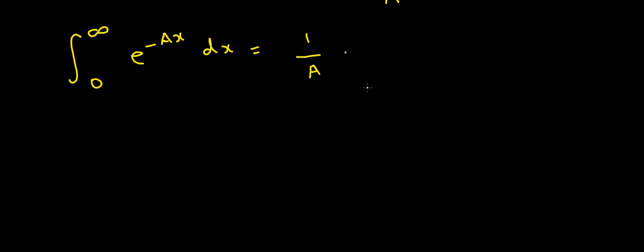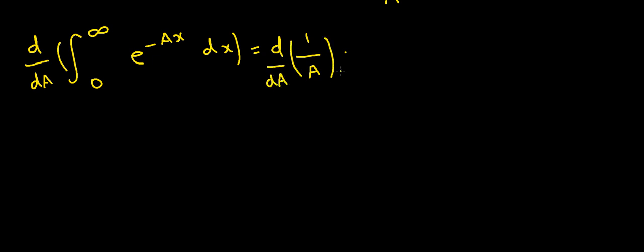We've proved that as long as a is a positive number, the integral from 0 to infinity of e to the minus ax dx equals 1 over a. Now I'm going to differentiate both sides with respect to a. There's a really nice rule called Leibniz's integral rule, also known as differentiation under the integral sign, which says that under certain conditions I can take this derivative and bring it inside the integral. I'll provide a link to the Wikipedia article in the description.